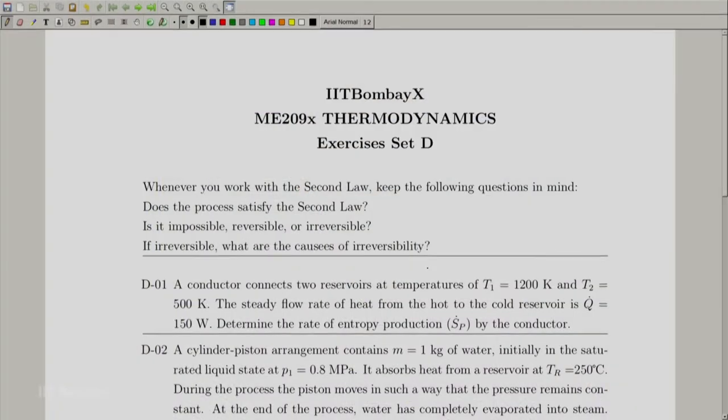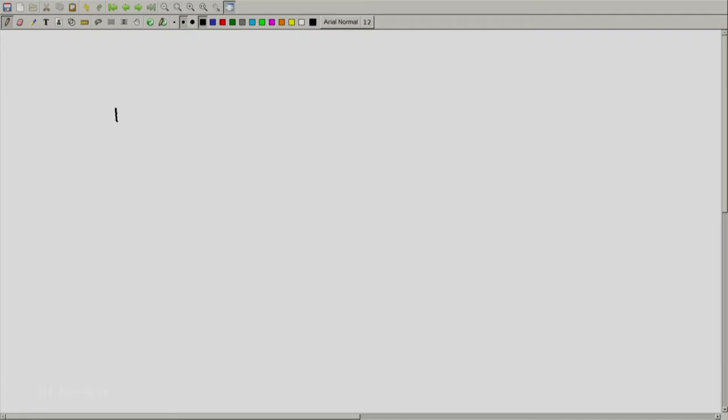First let us look at the very first exercise here, D01. What we are provided here is some sort of a conductor, a system called a conductor which connects two reservoirs at two different temperatures. Let us sketch it like this. We have one reservoir, we have another reservoir. This reservoir is at T1 which is at 1200 K and this reservoir is at T2, 500 K.